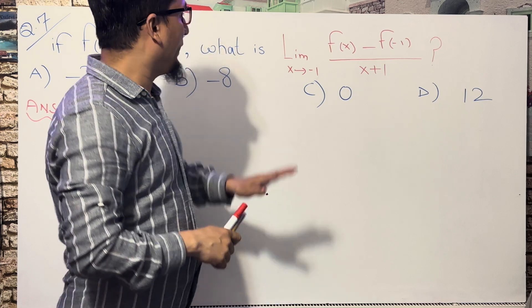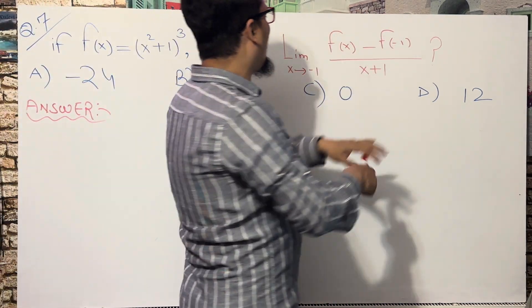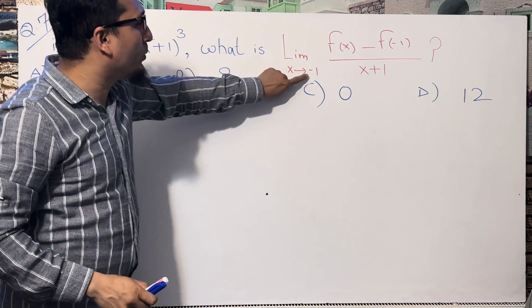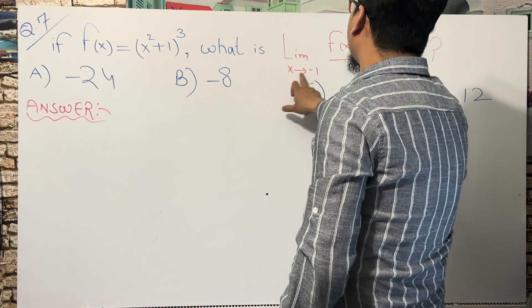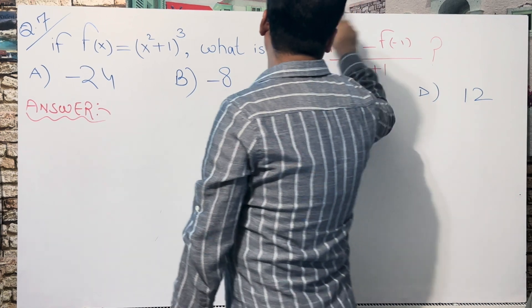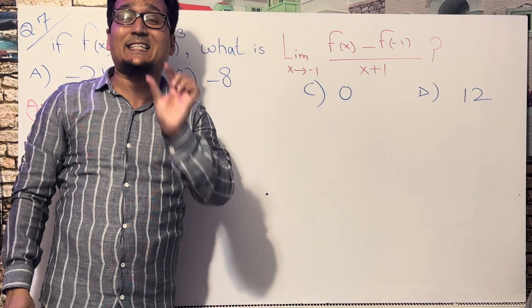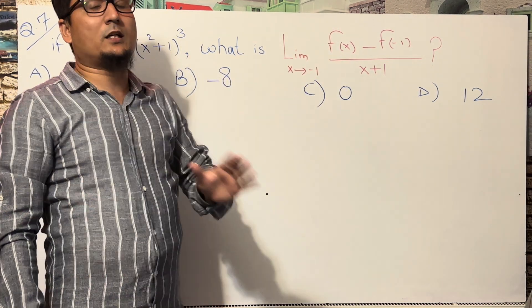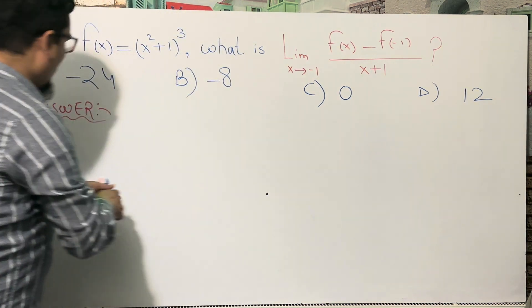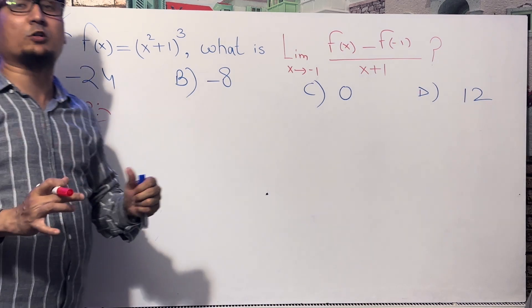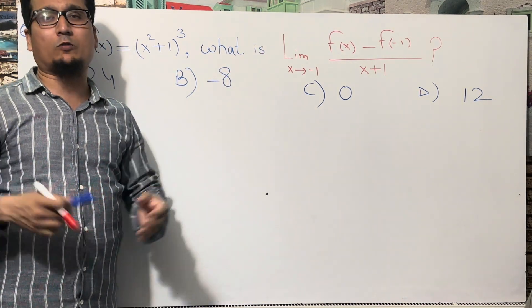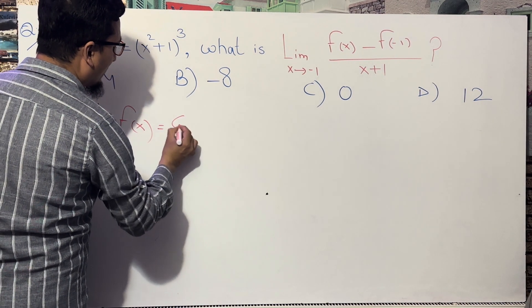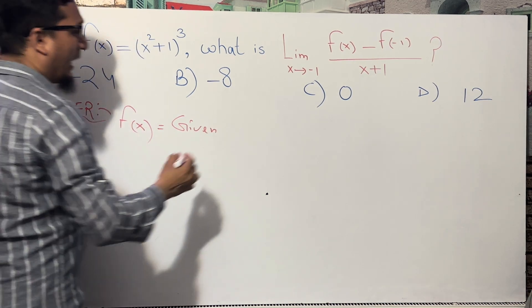This expression will give you a slope. The limit as x tends to minus one means you find the value where x approaches minus one — that gives you a specific number, which is the slope. This is not the derivative itself; this is the slope. Once you understand this core concept, you can solve questions from any other part. So if f(x) is given and you have to find f′(x), that is the derivative.